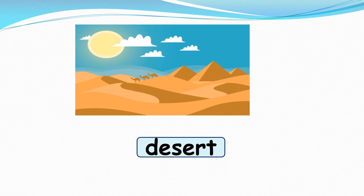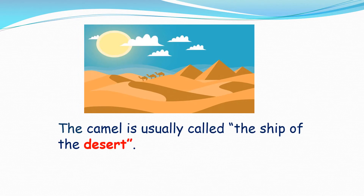The next word is 'desert.' The camel is usually called the ship of the desert.